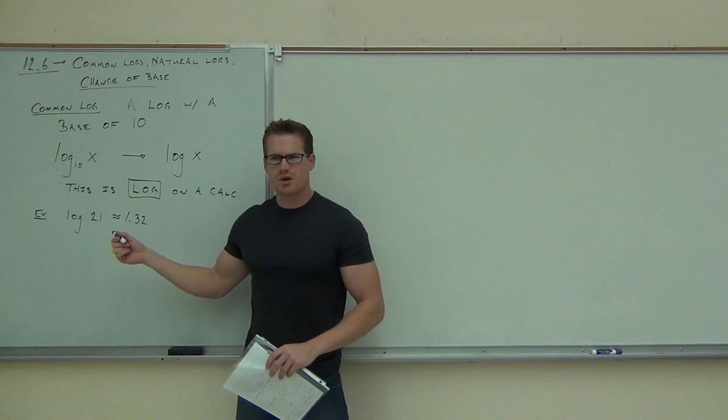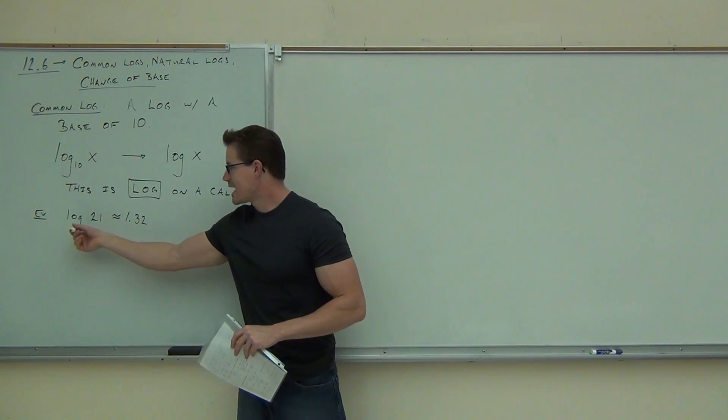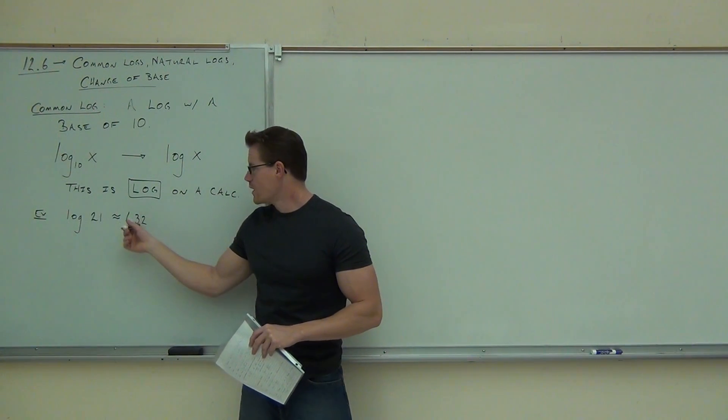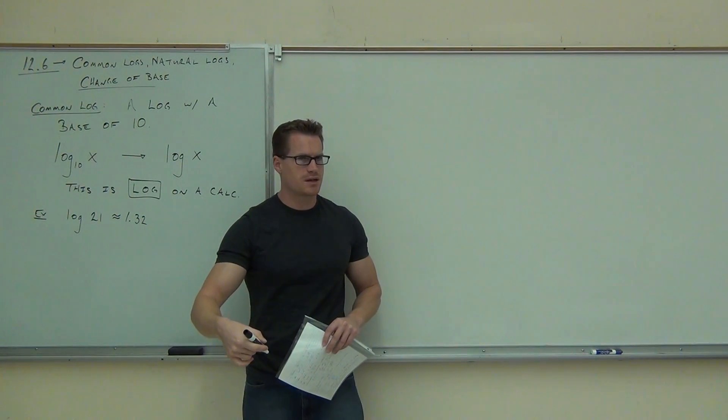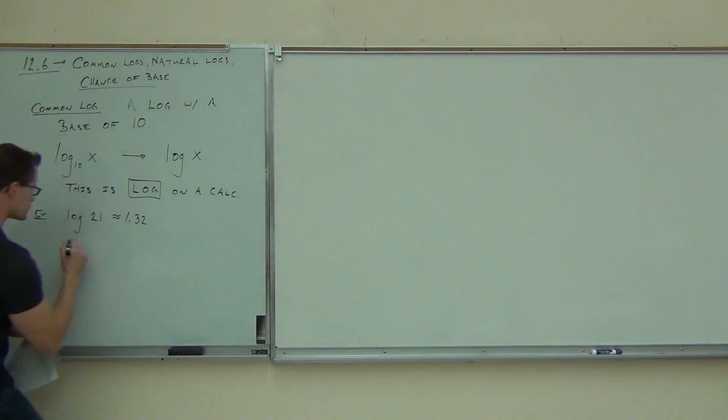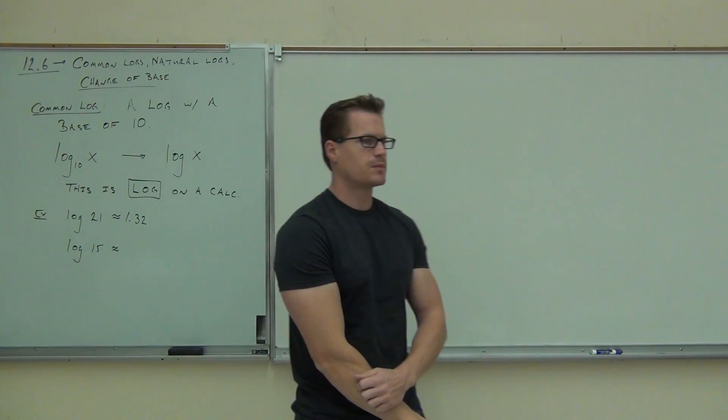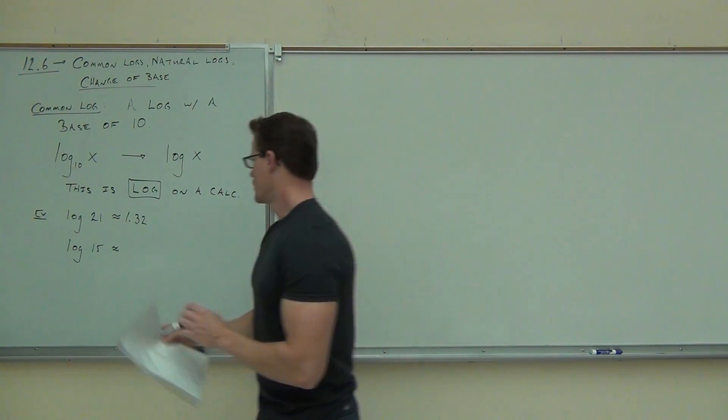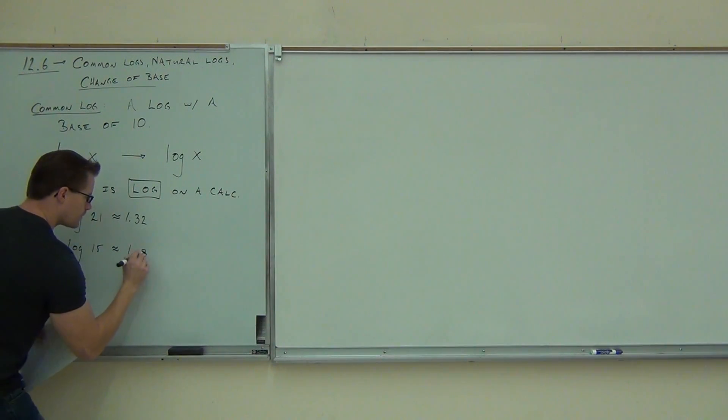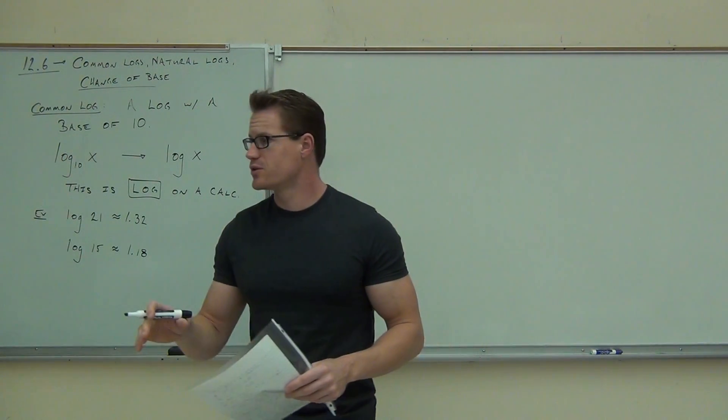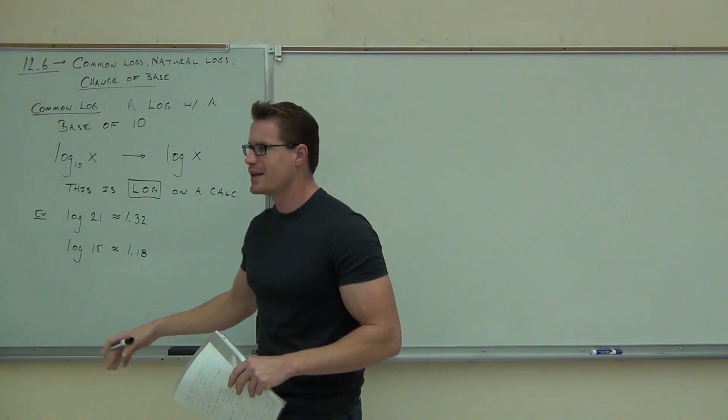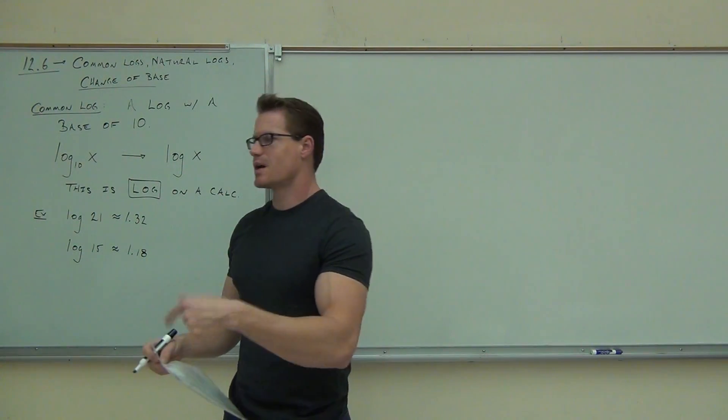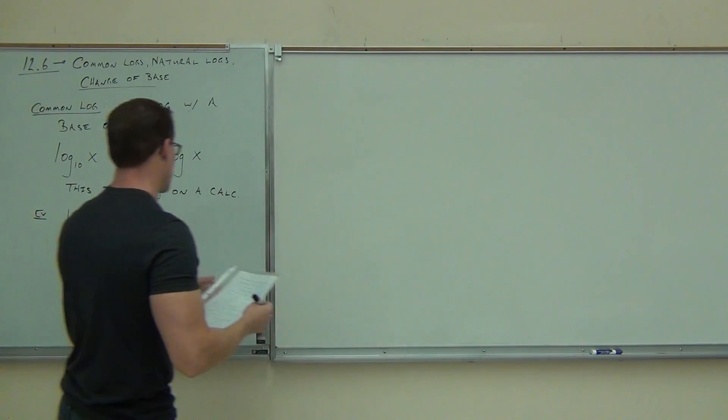So here's what that means. What's our base again? 10. So this is what this says. It says 10 to the 1.32 power is equal to 21. Are you guys okay with that log idea? Why don't you try one more for me? Do log 15. What's that going to be? 1.18. So we can easily find logarithms base 10 on your calculator. Now, will your calculators do log base 7, log base 2? Most of them won't. Some of them will. But most calculators will just do log base 10 and what's called natural log.